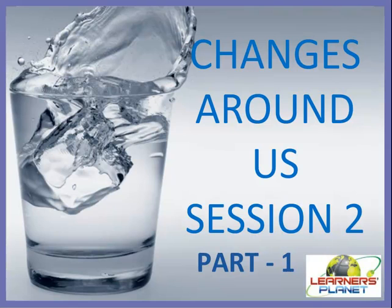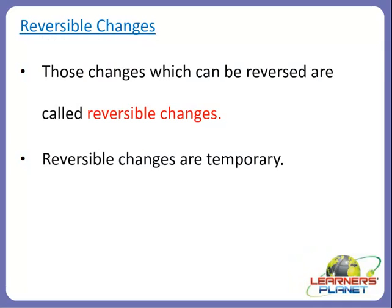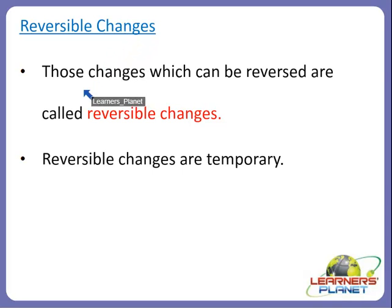Changes that occur around us can be broadly categorized as reversible and irreversible changes, depending on whether or not they can be reversed. Let us start with today's session and move on to reversible and irreversible as well as physical and chemical changes. So, what is meant by reversible change? Those changes which can be reversed are called reversible changes.